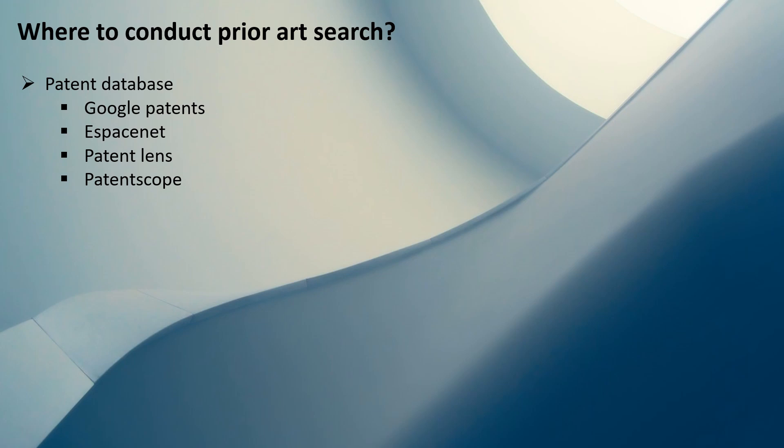In a later session, I'll explain a step-by-step approach on how to conduct a patent search or prior art search, which will be helpful for inventors conducting searches on their own. The second platform is research paper websites. For technical papers and scientific literature, Google Scholar is one such website where you can conduct a search on a topic and find various technical papers related to it.